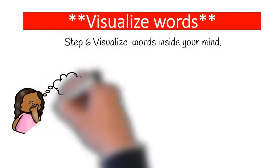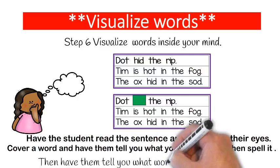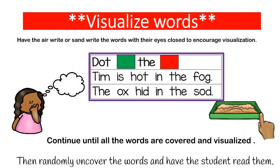The next step is extremely important. In order to create fluency for your students, they have to be able to visualize words. You're going to have them read the sentence, then tell them 'don't peek' — cover one of the words and have them tell you what word you covered. In this case I covered the word 'HID,' so you'd have the student say 'HID' and then spell it H-I-D. Have them spell out loud using their finger to write the word in the air or in sand. After they've spelled it, have them tell you what word they just spelled.